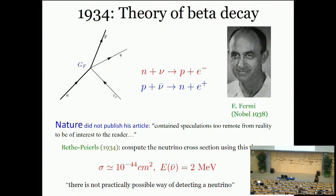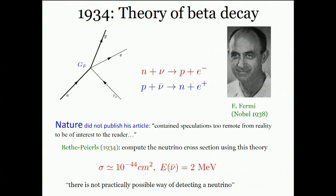It took many years and a great physicist like Wolfgang Pauli to come up with what he called a desperate remedy to save energy conservation. In his famous radioactive letter, he proposed that another invisible particle was being emitted together with the electron and therefore shared the available energy. After some trials, this particle was finally baptized with an Italian name, neutrino, in honor of Enrico Fermi, who built a theory of beta decay out of Pauli's hypothesis.